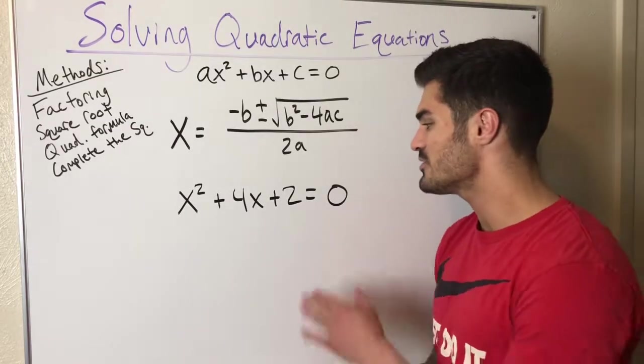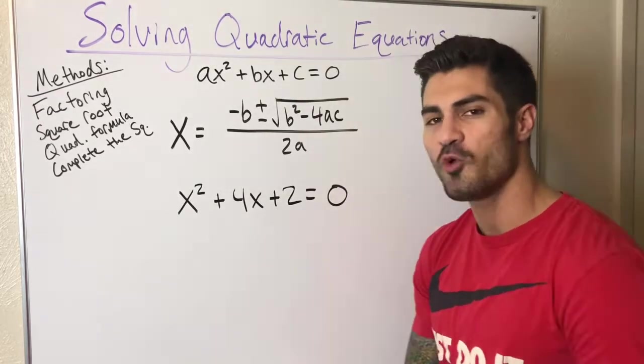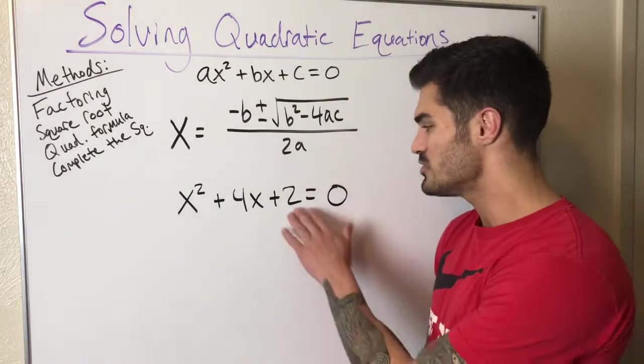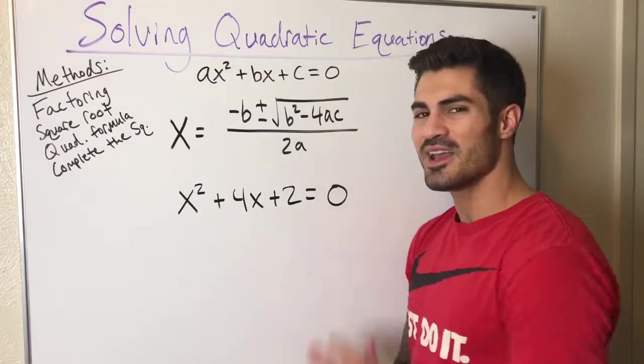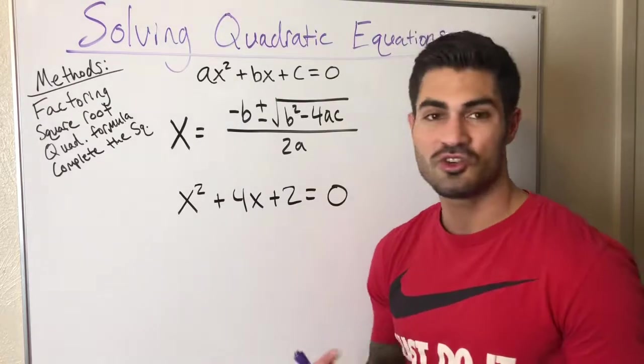But what if we have an example like this? I'm going to try to factor this. I'm looking for two numbers that multiply together to be 2 and add together to be 4. I can't find those numbers. I got 2 and 1, but that gives me 3. I can't quite get to that 4.